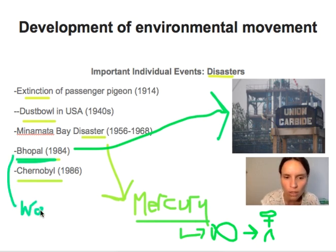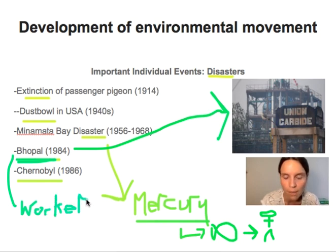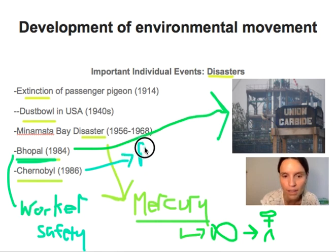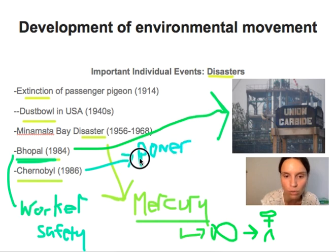Chernobyl, of course, was about nuclear energy production. Chernobyl was a power plant in Ukraine that had a major meltdown in 1986. There is still a lot of radioactivity in that area, and this really brought the question of how do we have sustainable power production in the world into the forefront of people's minds.